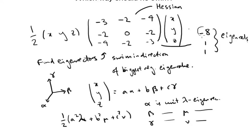So clearly the biggest here is minus 8, and we want to find the eigenvector in that direction.